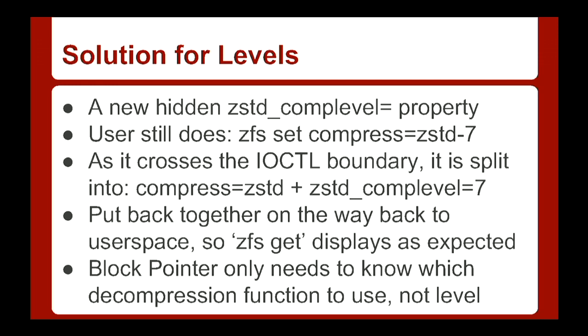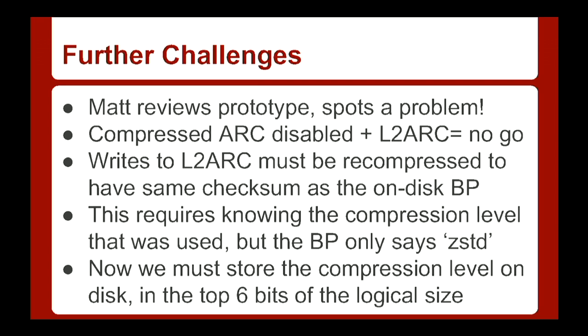The block pointer only needs to know what compression algorithm was used, not what level, because when decompressing you don't need to know the level — just like when you un-gzip a file, you don't have to tell gzip whether it was compressed with dash-1 or dash-9. By exposing it as one parameter to the user, they can't create an invalid configuration like setting ZStandard level 12, then changing to GZIP which doesn't have a level 12. However, Matt spotted a problem: if you run the slightly odd configuration of compressed ARC disabled but with an L2 ARC, when the L2 ARC writes data out, it needs to re-compress it — but the block pointer doesn't tell us what compression level to use.